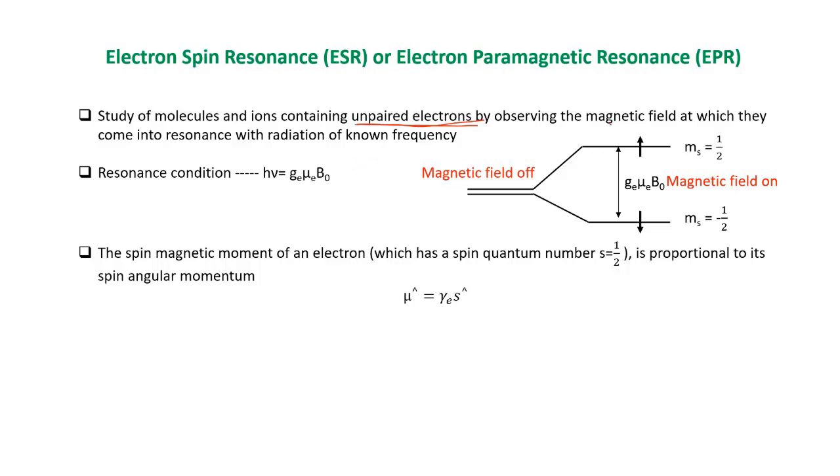It will be observed when the magnetic field at which they come into resonance with radiation of known frequency. The condition for resonance is hν = g·μE·B0, where g is called the G factor and μE is a constant which is 9.273×10^-24 joule per tesla, and B0 is the applied magnetic field.